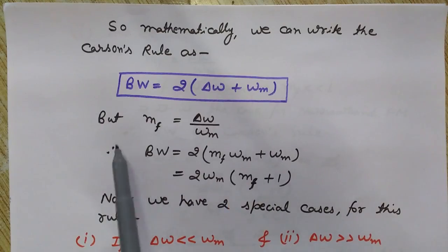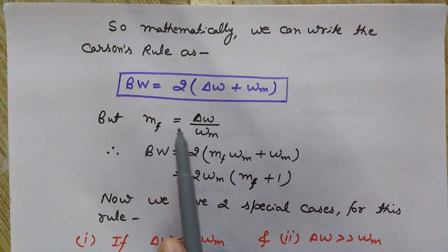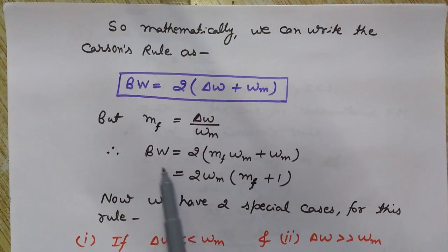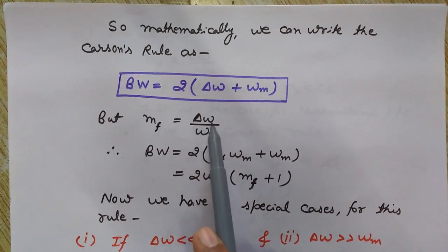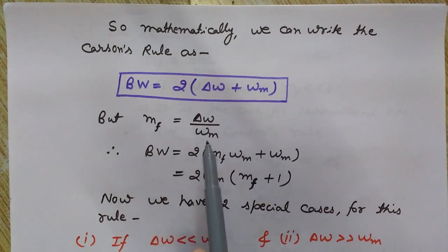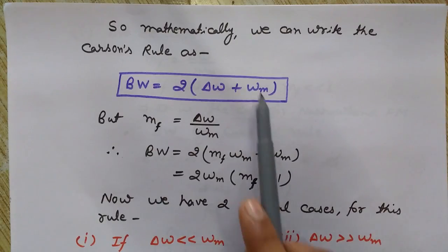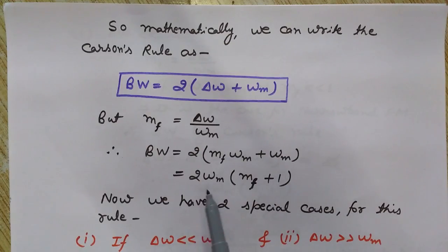Now the modulation index for frequency modulation, MF, is given by the ratio of ΔΩ and ΩM. Therefore the bandwidth equals two times of — replacing ΔΩ: from this relationship, ΔΩ = MF × ΩM. So replace ΔΩ by MF × ΩM in the bandwidth formula: Bandwidth = 2 × (MF × ΩM + ΩM).